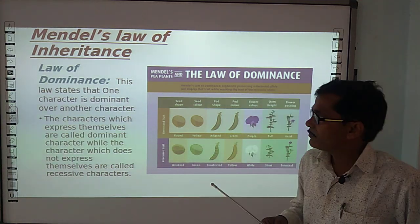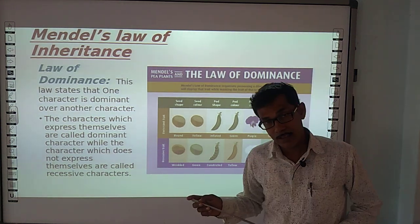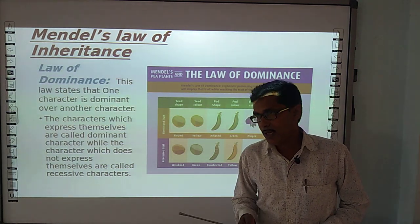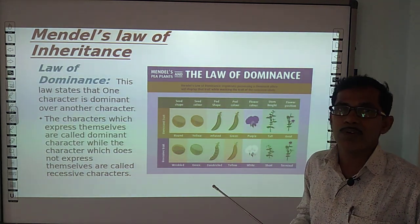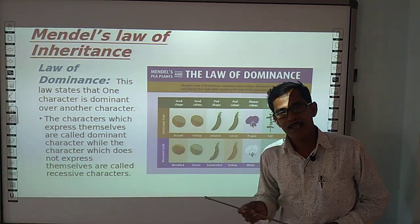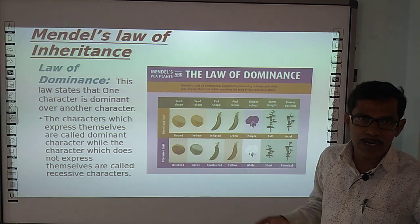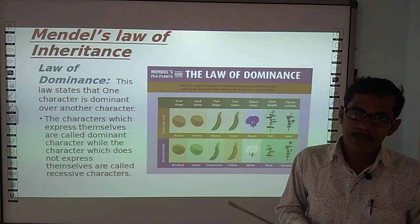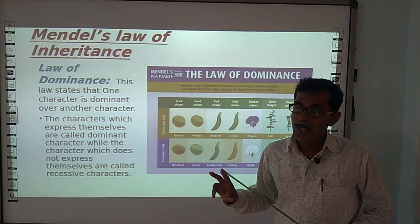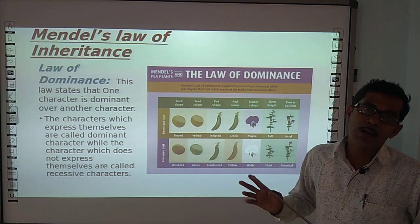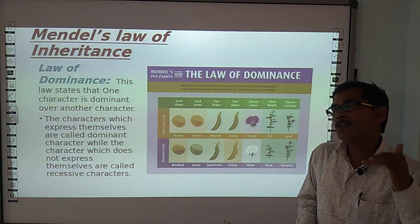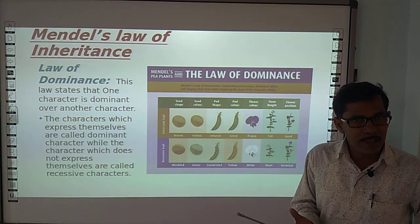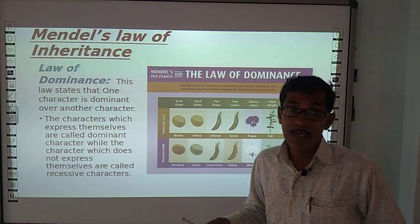This law states that one character is dominant over another character. According to the Law of Dominance, one character is dominant over another. In the previous video, we crossed between Tall and Dwarf plants. In the F1 generation, we can see the Tall plants. What does that mean? When we cross between Tall and Dwarf, the Tall character is dominant over the character of Dwarf.